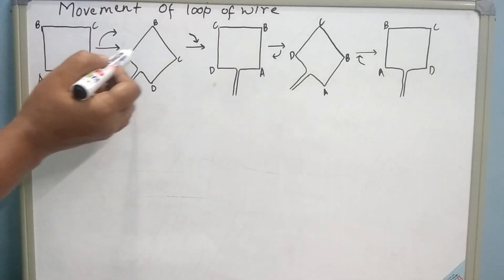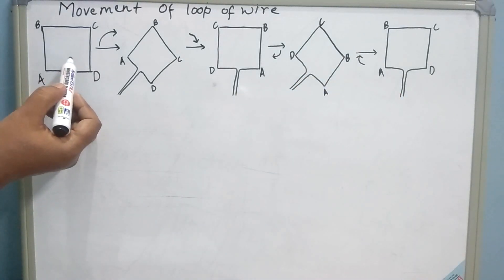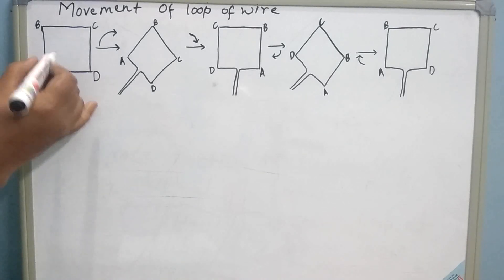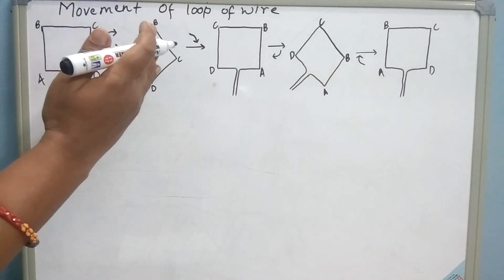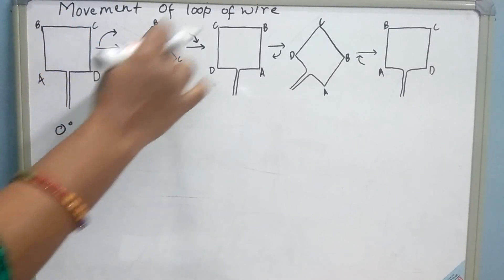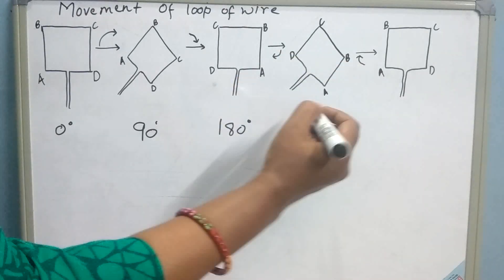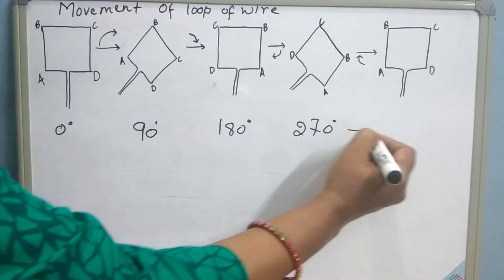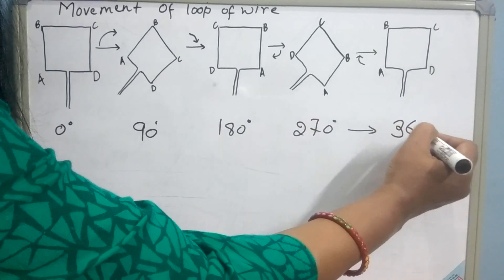These are different stages of movement of loop of wire. This loop, when it moves inside the magnet, there will be current induction. We can understand loop at 0 degrees. Now, this loop will turn 90 degrees and it will be like this. Then, there will be turning of 180 degrees. Again, the loop will turn next 90 and it will cover 270 degrees. After that, it will cover again 90 degrees and reaches to 360 degrees.